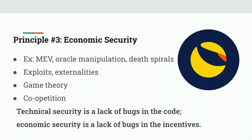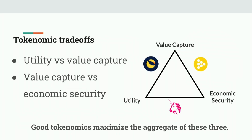Economic security also includes game theory — the sets of incentives you use to get users to take certain actions. I want to highlight the word coopetition: the macro alignment of incentives with micro incentives, where micro incentives might be between users competing for various things. A perfect example is mining — miners are all securing the protocol, but individually they're trying to maximize their own profit. There are trade-offs between each of these three principles, and you have to consider this when you're designing.